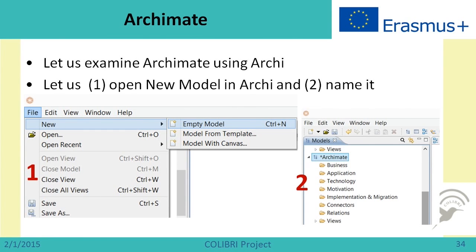When you open the tool, it is necessary to provide a place where we are putting our Enterprise Architecture model. For this, you go to Files, take a new one and give it a name. I have given the name Archimate. You can give some other name if you wish. When this is done, we can proceed to understanding how to use the tool.